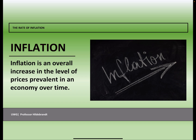Inflation we describe as an overall increase in the level of prices that are prevalent in our economy. We talked in an earlier chapter, Chapter 5, about the idea of a price level — this composite measure that talks about the overall what we see happening to prices in our macro economy. Inflation then is when that price level is increasing from quarter to quarter or from year to year.